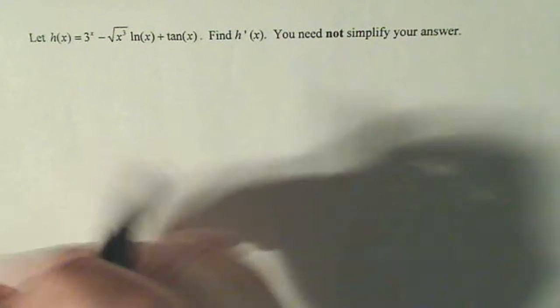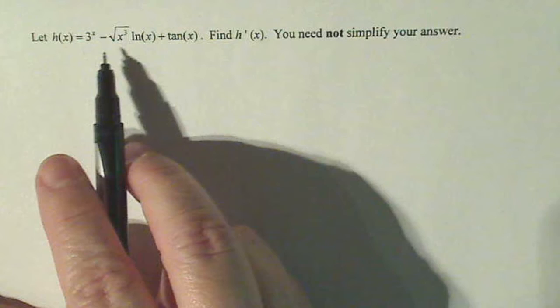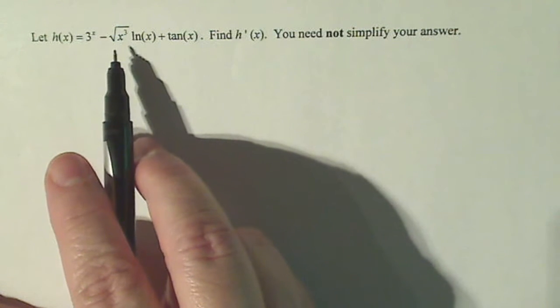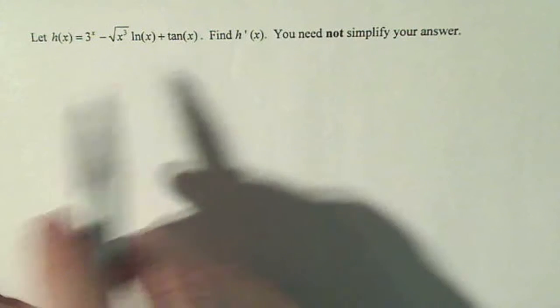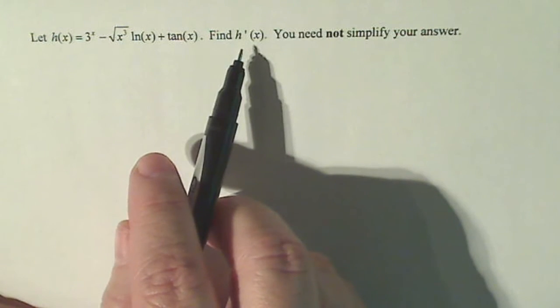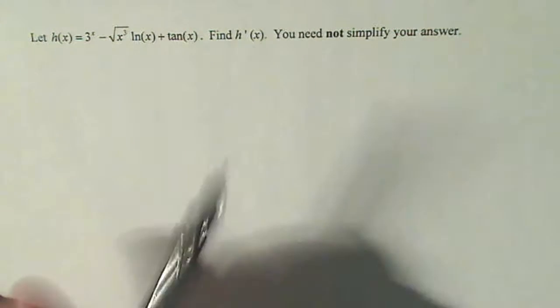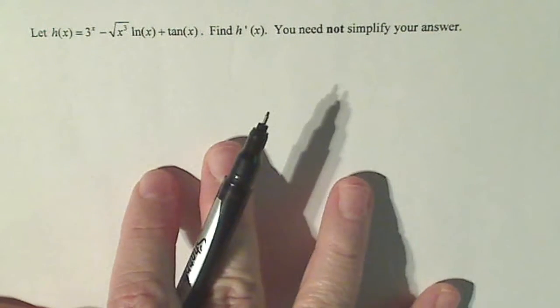We have this function h(x) equals 3 to the x minus the square root of x cubed times the natural log of x plus tangent x. And we're gonna find h prime of x and we don't need to simplify, so we're just doing the calculus version part of it.